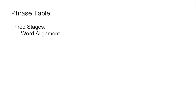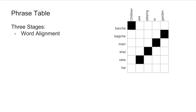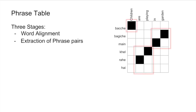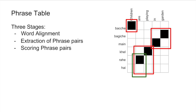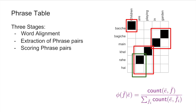How is the phrase table calculated? It is built in three stages. First is word alignment, where we take the source sentence and target sentence and map them. Second, we extract phrases — phrase extraction can be simple or complex. For example, 'khel rahe' can map to 'are playing,' or just 'rahe hain' can map to 'are.' The score is based on probability — how many times you encounter 'are playing' as a translation of 'khel rahe hain.' By counting these occurrences, the scores are calculated.